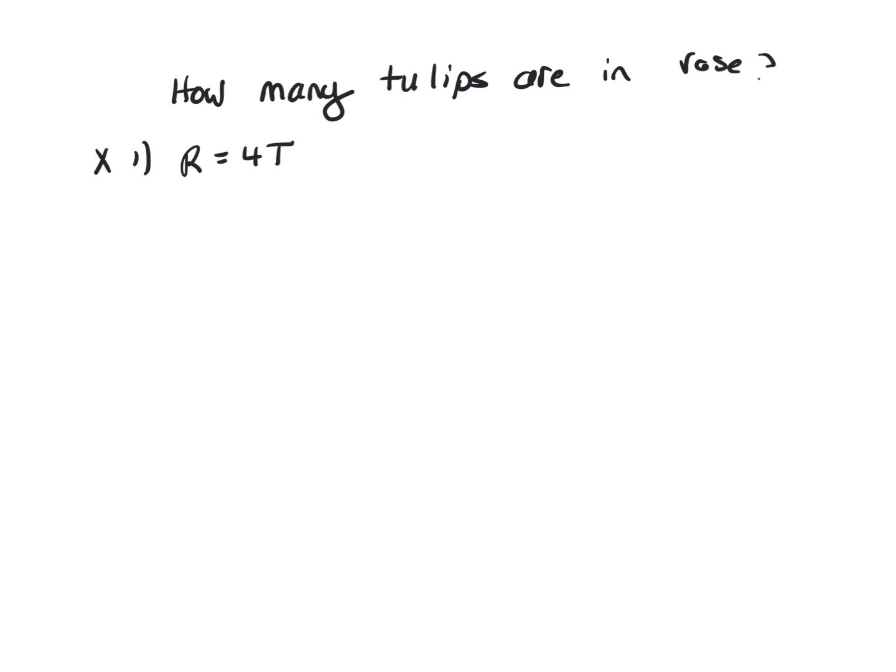Now, forget about clue one. Forget about it. Clue two. There is a total of 20 flowers in the vase. That would be R plus T equals 20. That doesn't work either.